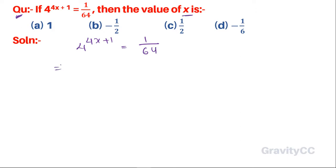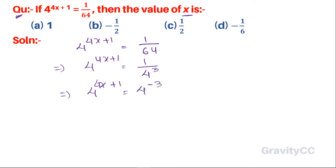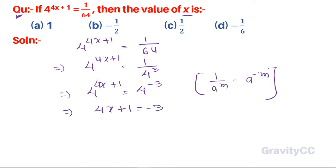So, 4 to the power (4x + 1) equals 1 upon 64, and 64 is 4 to the power 3. Therefore, 4 to the power (4x + 1) is equal to 4 to the power minus 3, since 1 upon a to the power m equals a to the power minus m. So the exponent (4x + 1) equals minus 3.